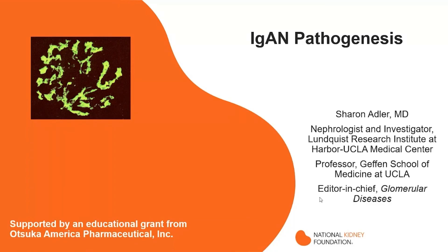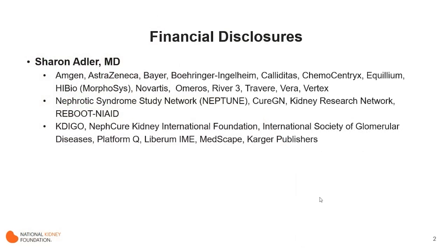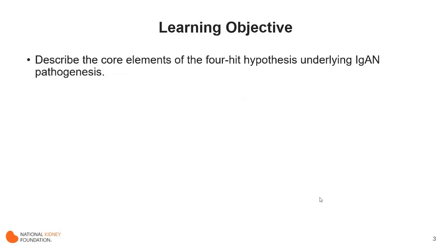Hi there. Welcome, audience. We're going to talk about the pathogenesis of IgA nephropathy. I'm Sharon Adler, a nephrologist and investigator at the Lundquist Research Institute at Harbor-UCLA Medical Center, and professor of medicine at the Geffen School of Medicine at UCLA. Here are my financial disclosures. Our learning objective today is quite simple: we're going to discuss the core elements of the four-hit hypothesis that underlies the pathogenesis of IgA nephropathy.